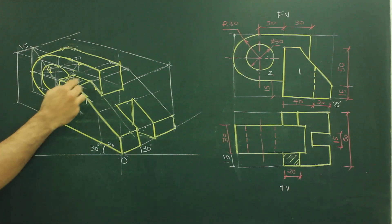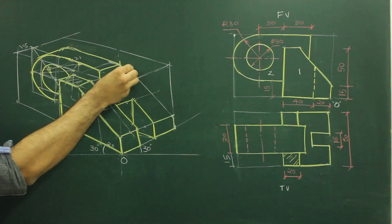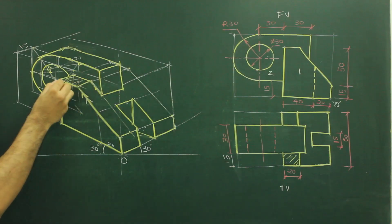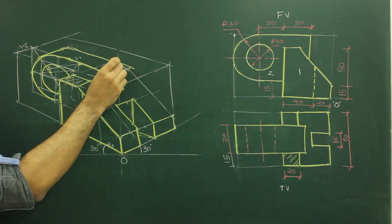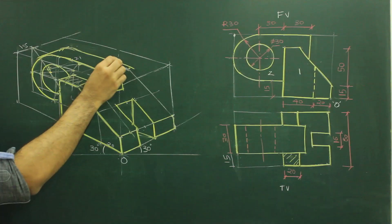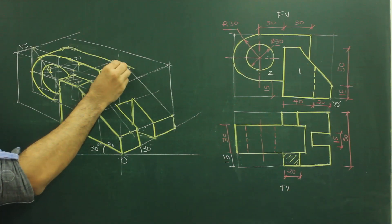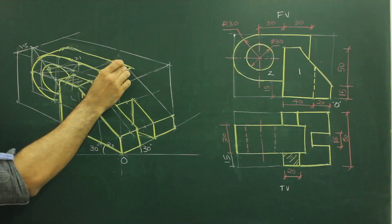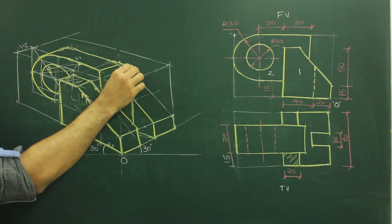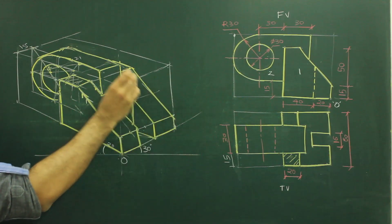Now we'll draw the behind portion. From here you go behind by 16, and from here you go behind by 60 — which you've already drawn — so you'll be able to see only a slight part. Join this and draw this.